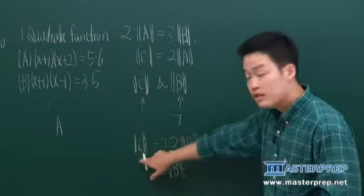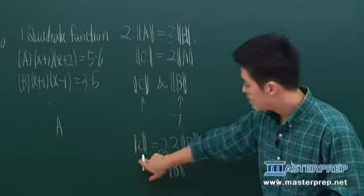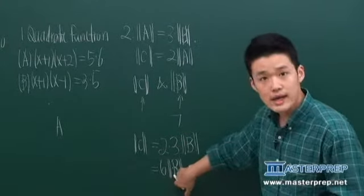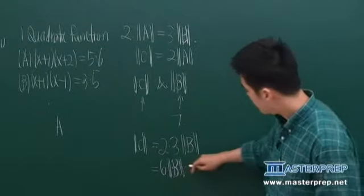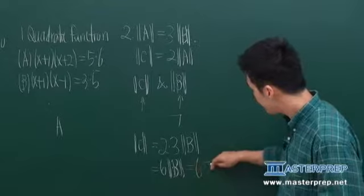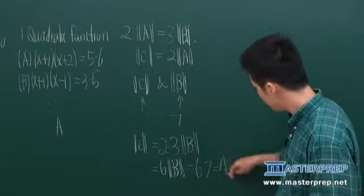So this is equal to six and B, which means the speed of C, the train C, is actually six times faster than B, train B. So if B is seven, six times seven is equal to 42.